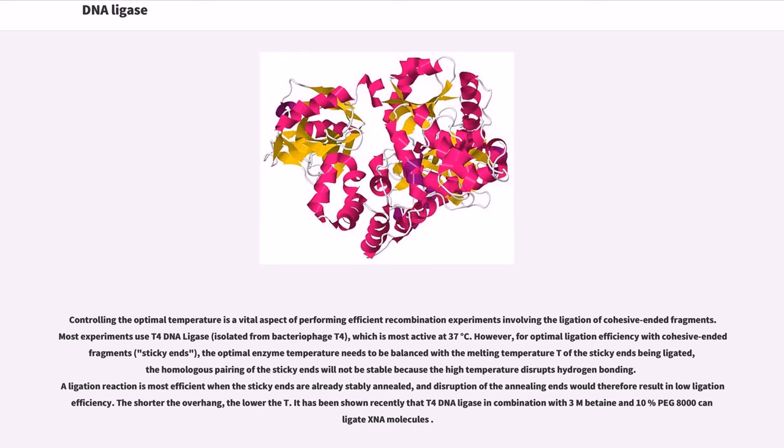Controlling the optimal temperature is a vital aspect of performing efficient recombination experiments involving the ligation of cohesive ended fragments. Most experiments use T4 DNA ligase, isolated from bacteriophage T4, which is most active at 37 degrees Celsius. However, for optimal ligation efficiency with cohesive-ended fragments, sticky ends, the optimal enzyme temperature needs to be balanced with the melting temperature Tm of the sticky ends being ligated.